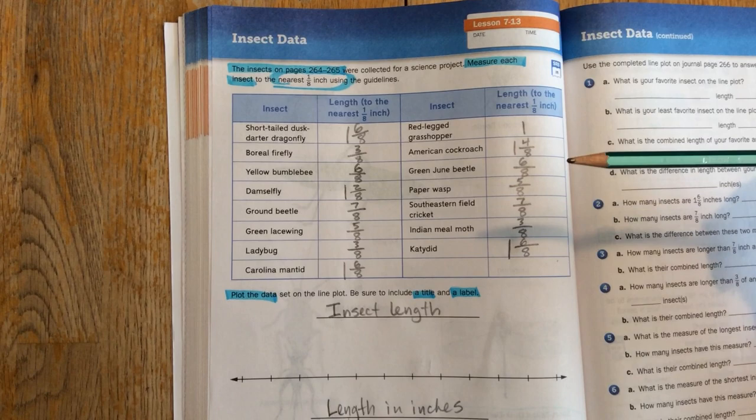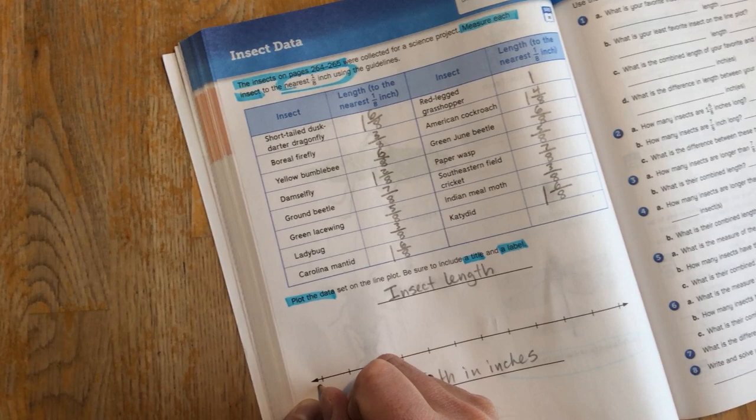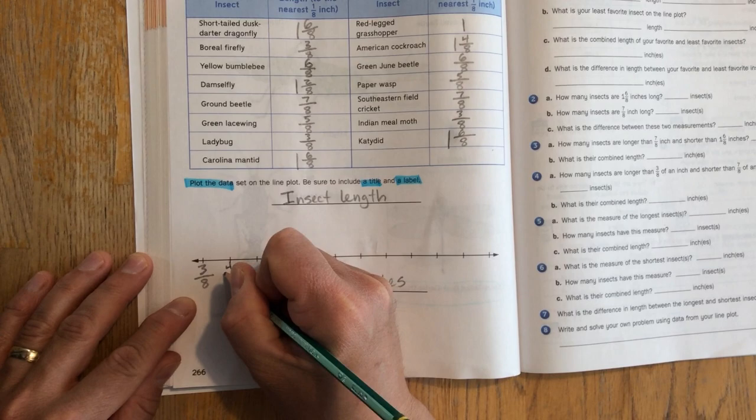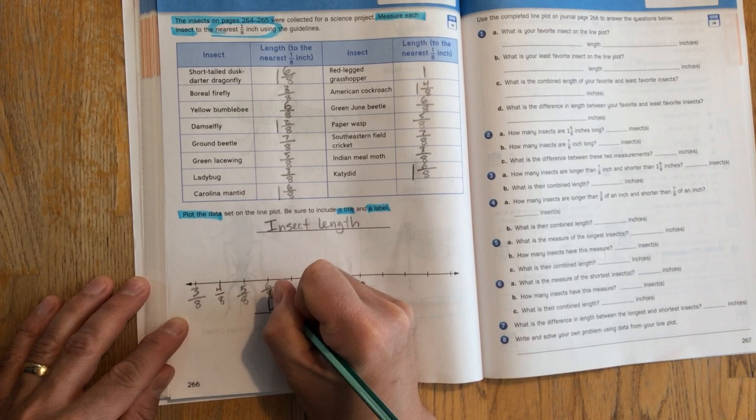So I think 3 eighths is a good place to start. So I'll just put that right here. Line plots and number lines don't always have to start at zero. Okay, so I'm going to start with 3 eighths, and then I'm going to count up: 4 eighths, 5 eighths, I'm going to keep going, 6 eighths, 7 eighths.